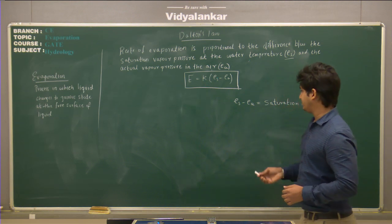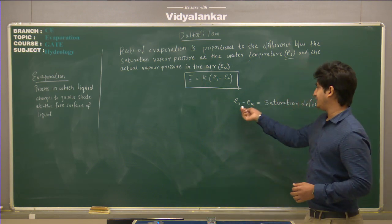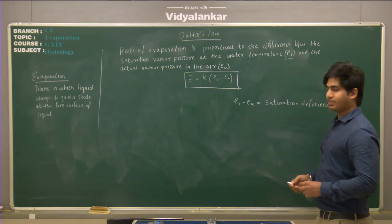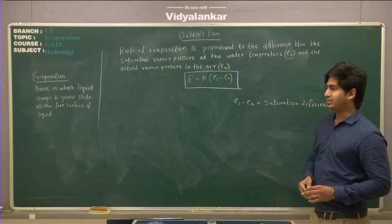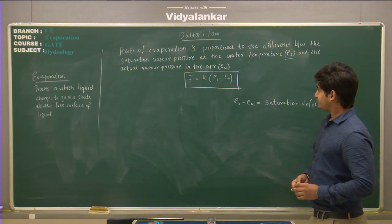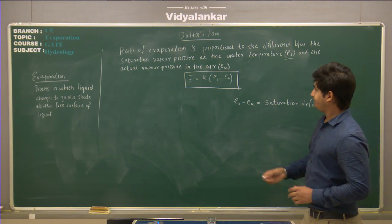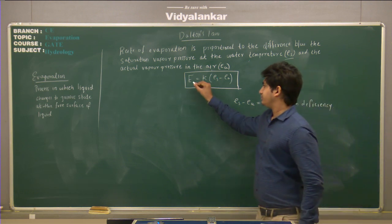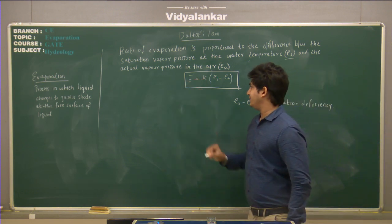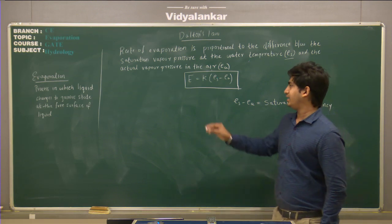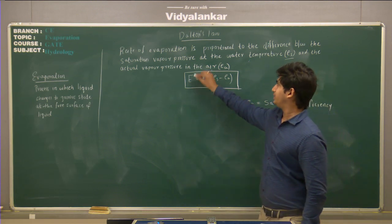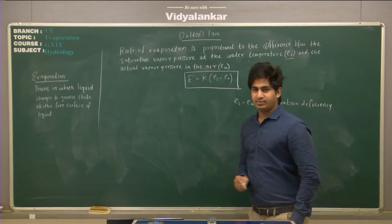Es minus Ea is called the saturation deficiency. So, as per Dalton's law, E is equal to K into (Es minus Ea).